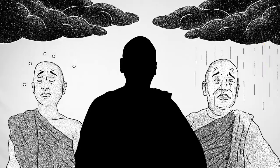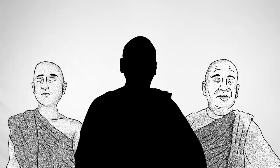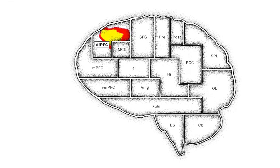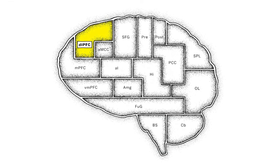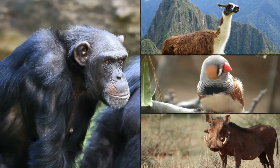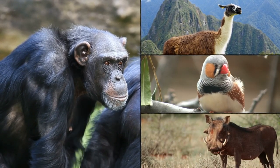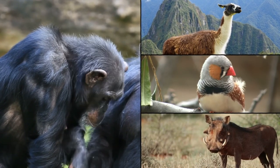It's what some Buddhists call the monkey mind. In that moment, when you direct your attention back to your breath, a part of the brain lights up — the dorsolateral prefrontal cortex. It's one of those brain regions that sets us primates apart from other animals, part of the control center that helps us focus.